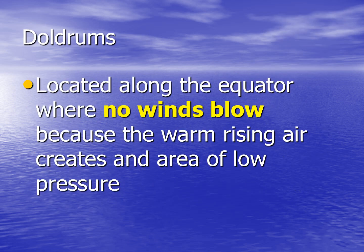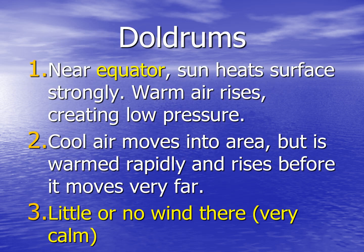Doldrums are located along the equator where no winds really blow, because the warm air rising creates an area of low pressure. Doldrums occur near the equator — the sun heats the surface strongly, warm air rises creating low pressure, cool air moves into the area but is warmed rapidly and rises before it moves very far. That is why there is little to no wind. It's usually very calm.